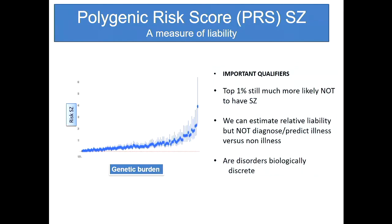I don't want anyone to go away thinking we're now doing genetic diagnosis of psychiatric disorders, because we're not. This is woefully inadequate for diagnosis - you'd get vastly more people wrong than right if you ever tried to apply this methodology. But what you can do is measure people's risk for schizophrenia and where they are in that spectrum.